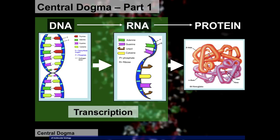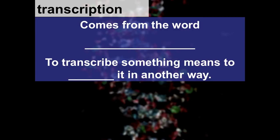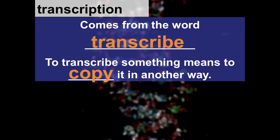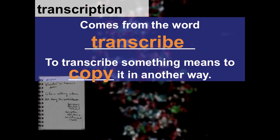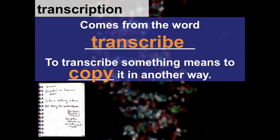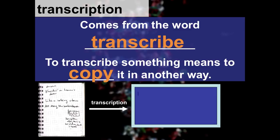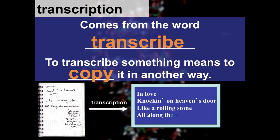The first step of the central dogma theory is called transcription — this is how our DNA gets coded into RNA. Transcription comes from the word 'transcribe,' and to transcribe something means to copy it in another way. You're not necessarily changing the information; it's still the same information, just copied down in a different way.